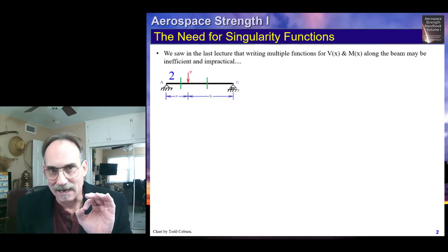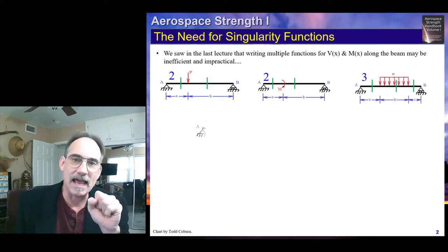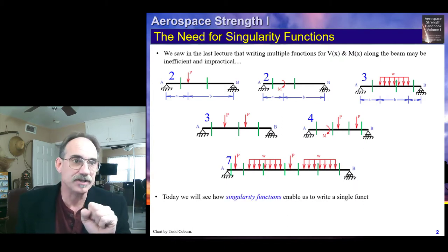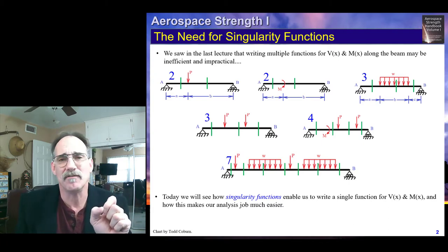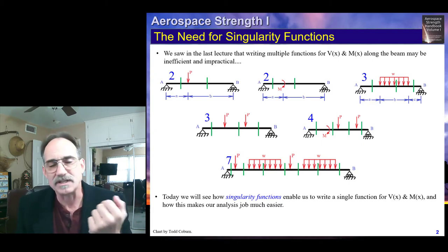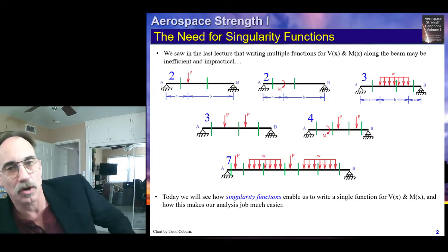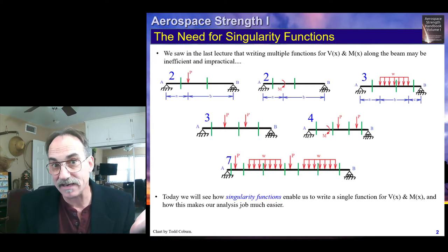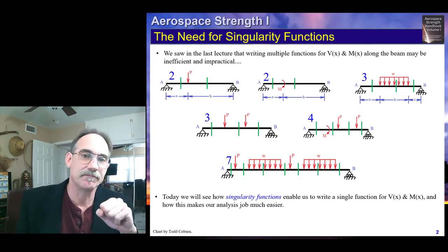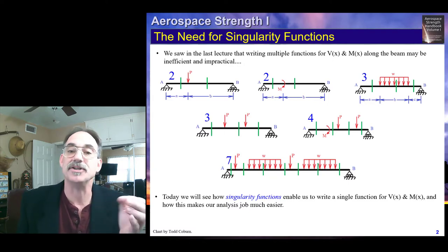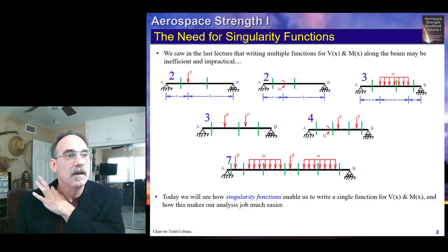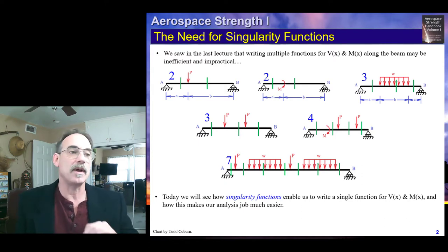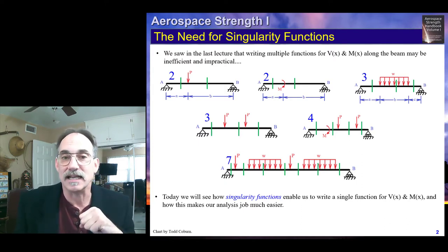We saw last time, in sublecture 12a, that each beam requires multiple shear functions for the different segments of the beam, and multiple moment functions for each segment. While this is not a big deal if there's only one or two functions required, it can be quite a hassle when we have four, five, or seven different functions. This gets increasingly challenging as you go on to calculate slopes and moments. So one powerful way is to write a single function for the beam, starting with the loading and then looking at how that translates into shear and moment.